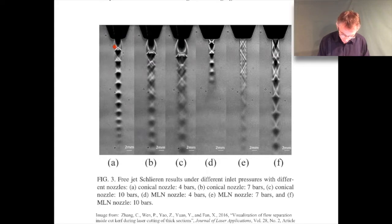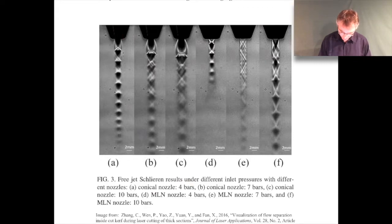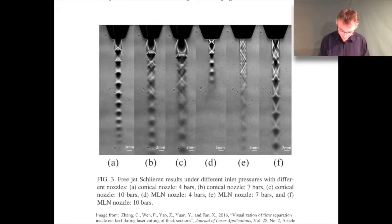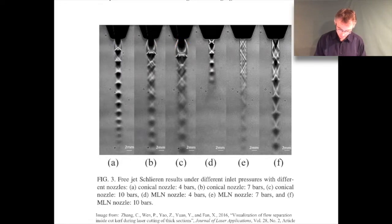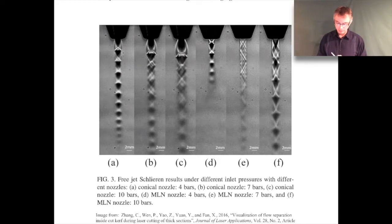I want to highlight the three converging-only nozzles on the left. You can see the flow comes out and expands as it exits. The pressure increases going from A to B to C: nozzle A is at four bars stagnation pressure, nozzle B at seven bars, and nozzle C at ten bars. You can see that the higher the upstream pressure, the more the jet expands. Then you get this complicated behavior with diamond shapes.